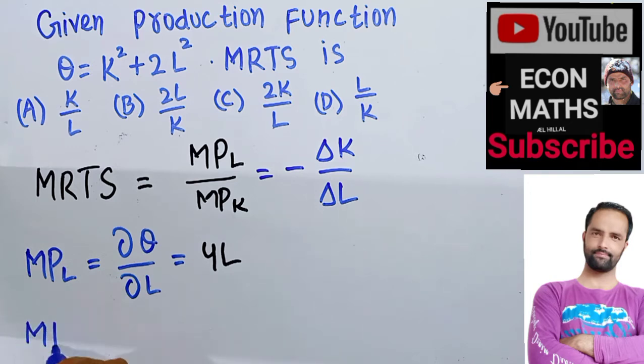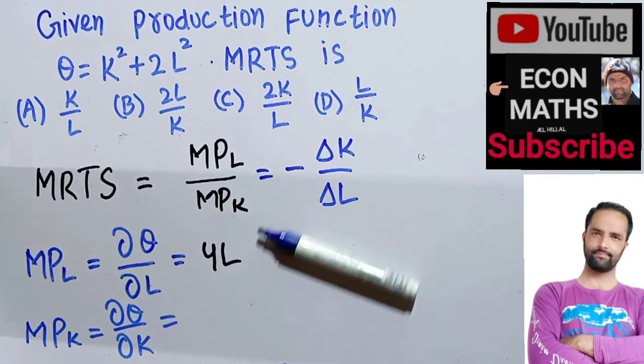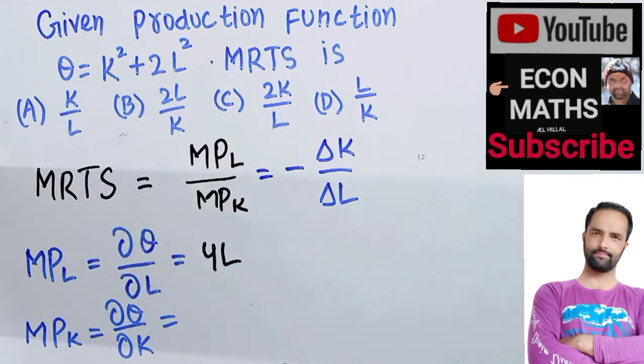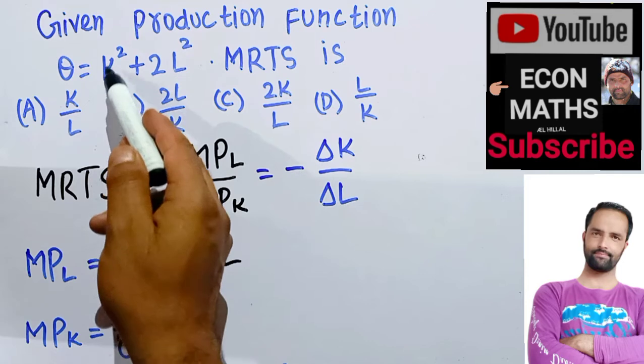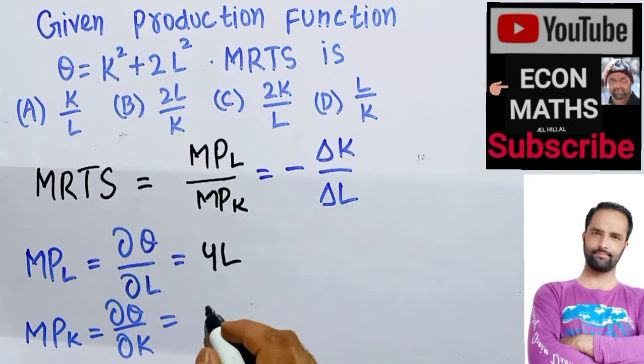Symmetrically, marginal product of capital means change in output with respect to change in capital. By definition, we need to take the derivative of the production function with respect to capital. The derivative of K² is 2K, and the derivative of a constant is obviously 0.